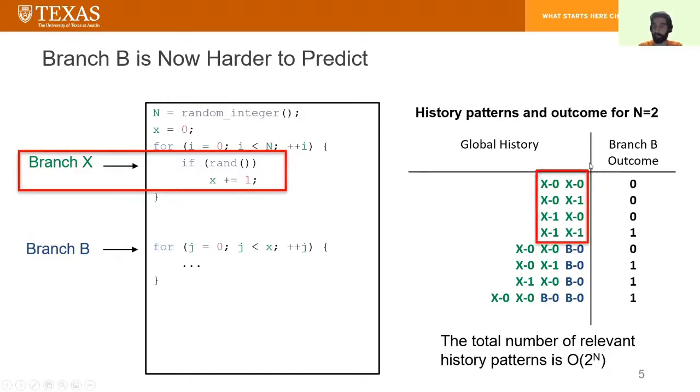For example, look at the first four rows in the table now. We need to at least remember four different patterns, Branch X being not taken, not taken, not taken, taken, taken, not taken, taken, taken. As a result, now the total number of history patterns that we need to remember is order of 2 to the n. This exponential behavior is problematic even for state-of-the-art branch predictors like TAGE.